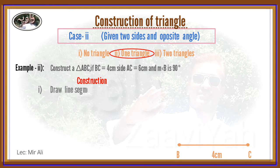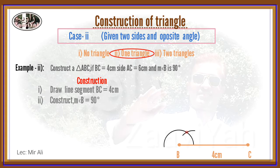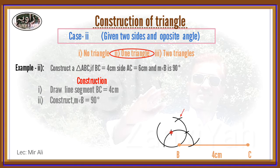On the line segment, taking endpoint B as center, draw an arc of any radius. Draw an arc from center to intersect at 60 degree angle, then at 120 degree angle, and finally construct a 90 degree angle at point B.